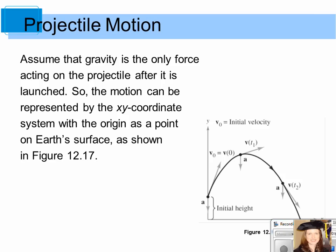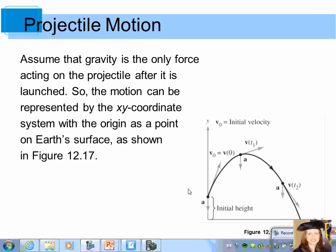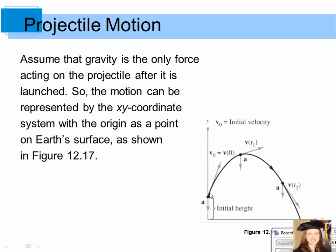An application involving vector-valued functions has to do with projectile motion. Assume that gravity is the only force acting on the projectile after it is launched. The motion is represented by the xy-coordinate system with the origin as a point on the Earth's surface. You project an object into the air from an initial height; it goes up and eventually comes back down due to gravity. The height and range depend on the initial height, initial velocity, and the angle of inclination. Notice that the velocity vectors at t=0, t sub 1, and t sub 2 are all tangent to the path.